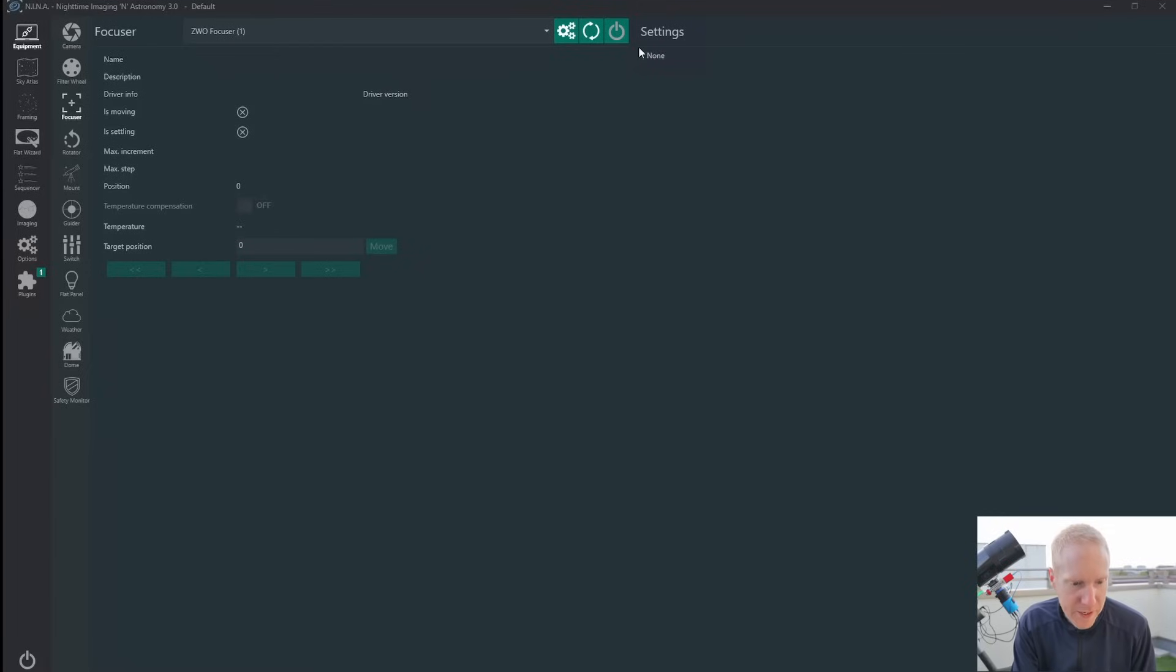And that's actually me reading incorrectly, and the solution was actually simple. So let's say you're in Nina, you've connected to your ZWO EF, and then you're trying to move it in, which it is doing successfully right now, or you're trying to move it out, or vice versa. And for you, it just doesn't do anything, and it beeps. Okay, what is your next step?